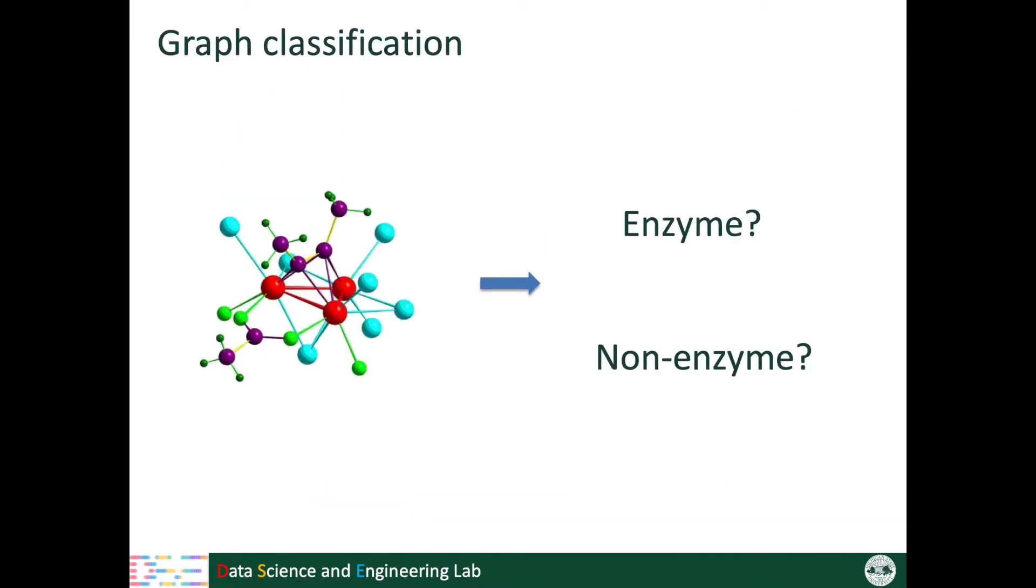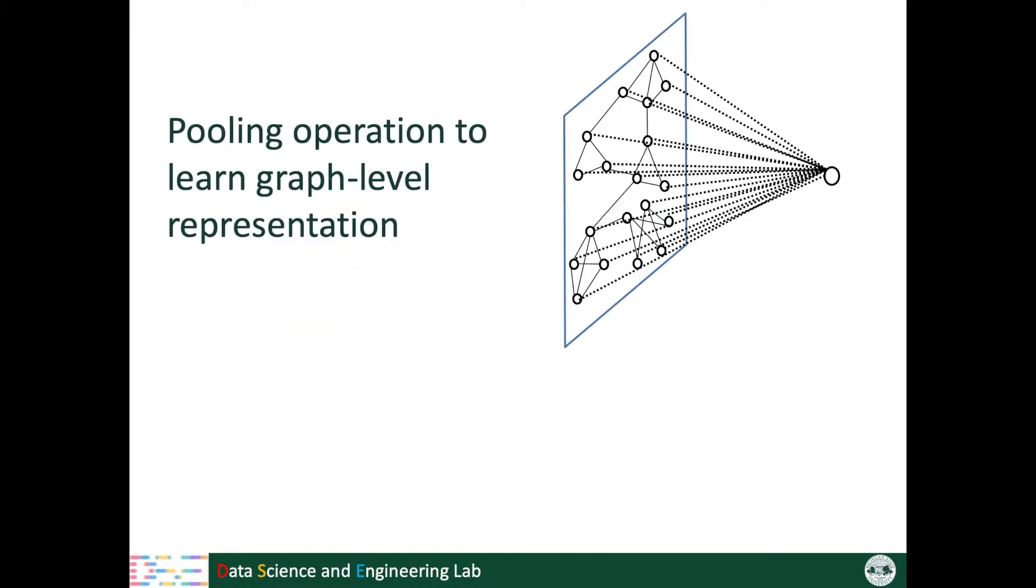However, a lot of times we want to perform graph-level tasks such as graph classification. For example, given a protein, we want to tell whether it's an enzyme or not. Thus, a pooling operation which can summarize the node representations to form graph representation is necessary.